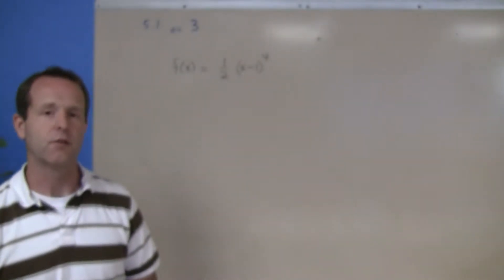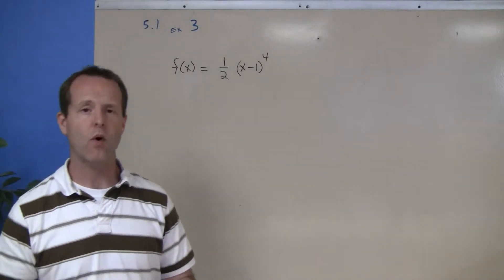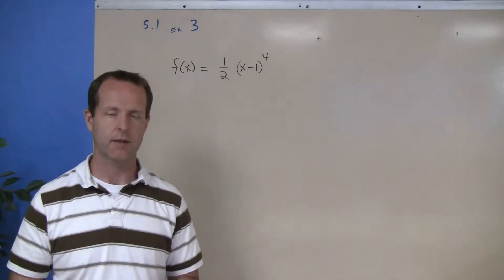Here we have the function f(x) equals 1/2 times the quantity (x - 1) to the fourth, and I want to graph this using some transformations.